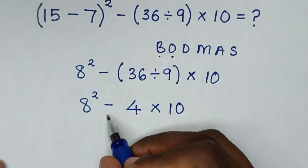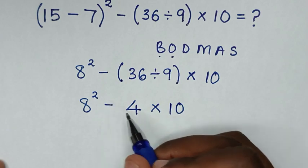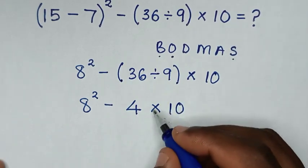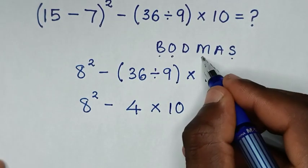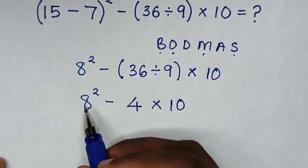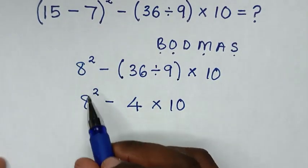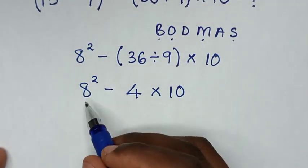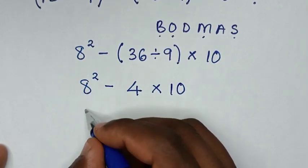Then in here we have subtraction sign which is this and multiplication sign which is this. So we'll start to deal with this order or exponent whereas 8 squared is 8 times 8 which is 64.